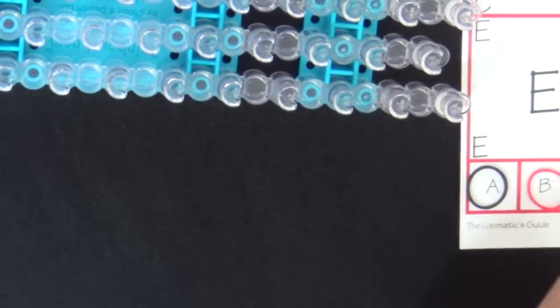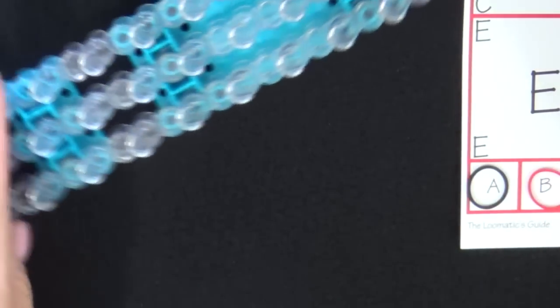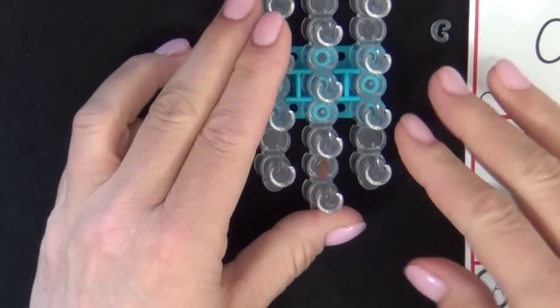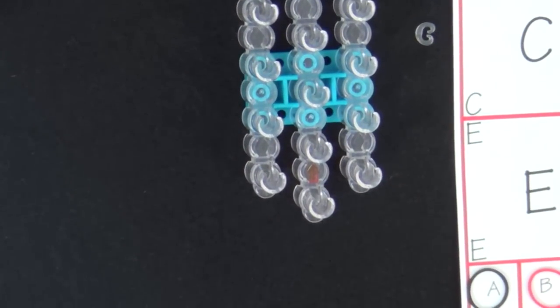Now we're ready to extend the bracelet. To extend the bracelet, you must first decide how many additional bands you will need to extend. For smaller wrists, three or four bands may work. For larger wrists, six or more bands may work.